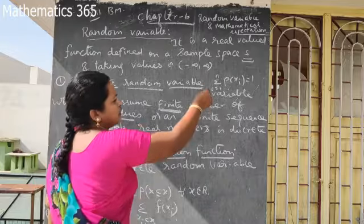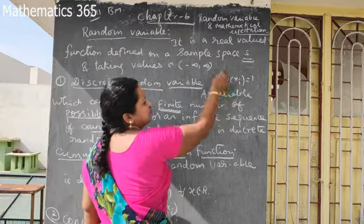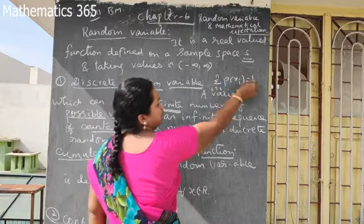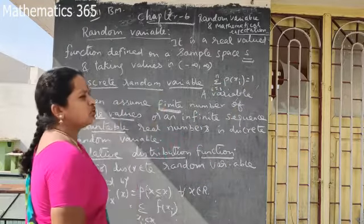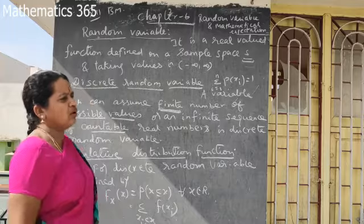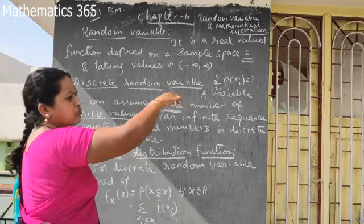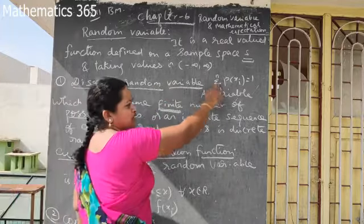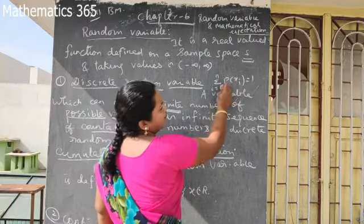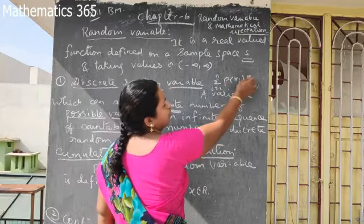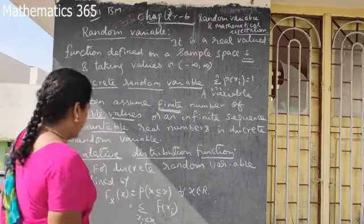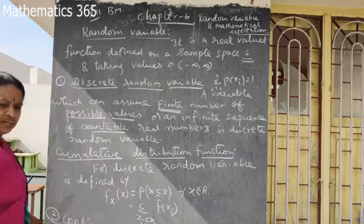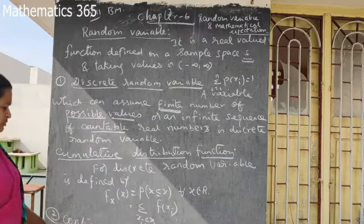For a discrete random variable, the summation from i equal to 1, p of x i is equal to 1. That is, all probability values must add up to 1.